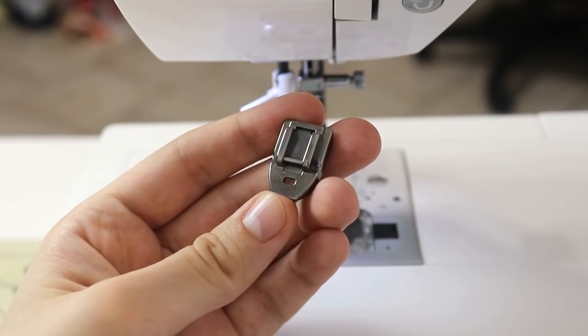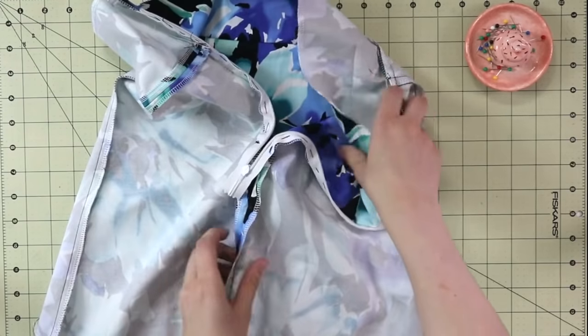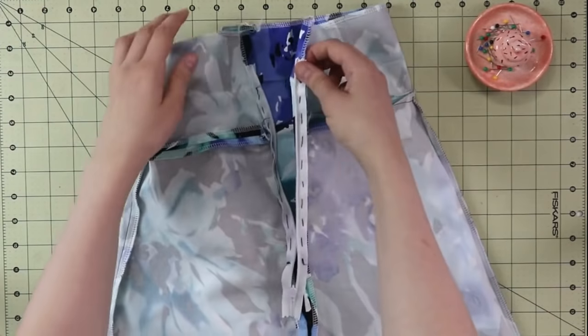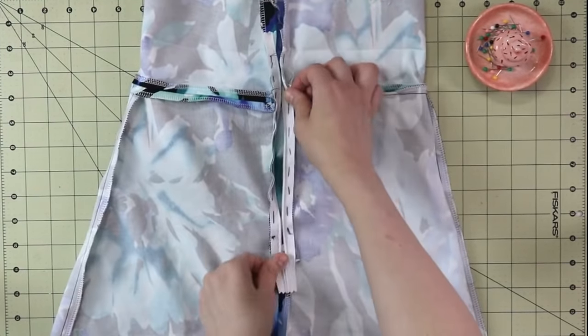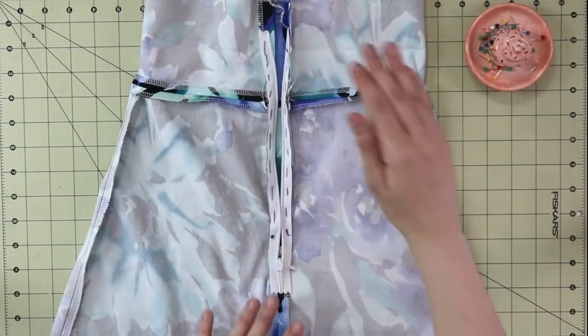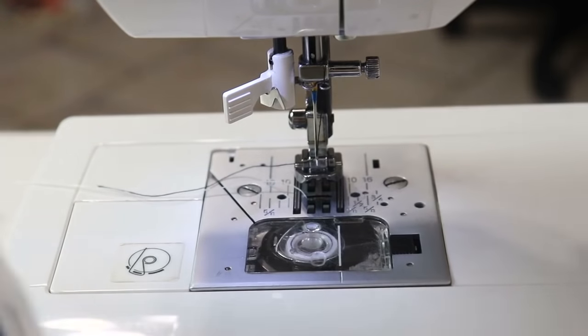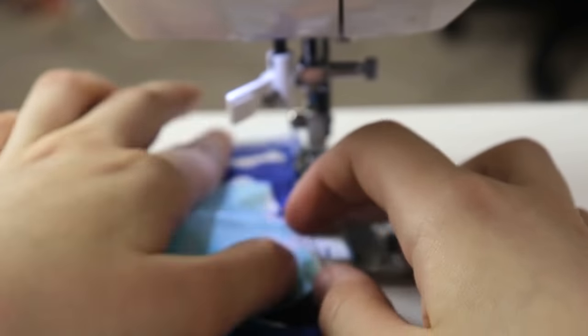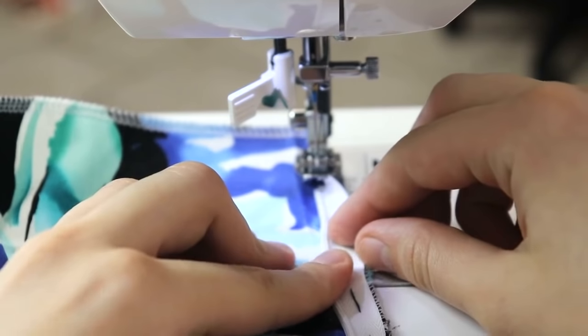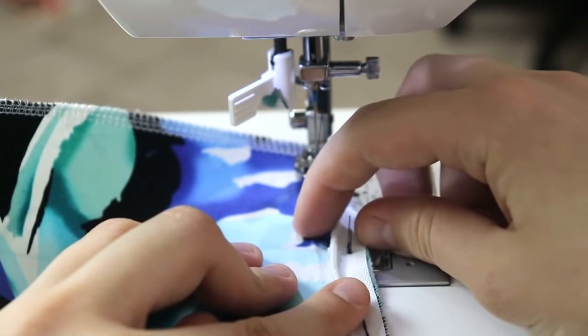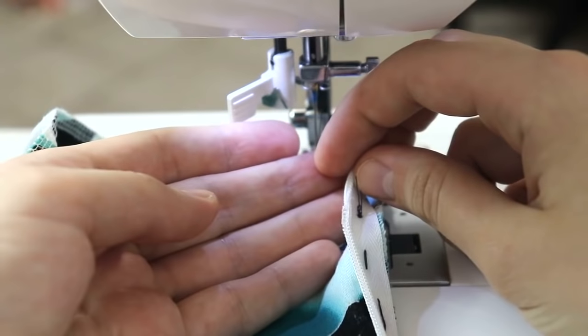One important moment before we start: make sure that your zipper is open all the way down, all the way to the bottom, like so. Now grab either side of your project and place it underneath your invisible zipper foot so that it matches the actual zipper perfectly.